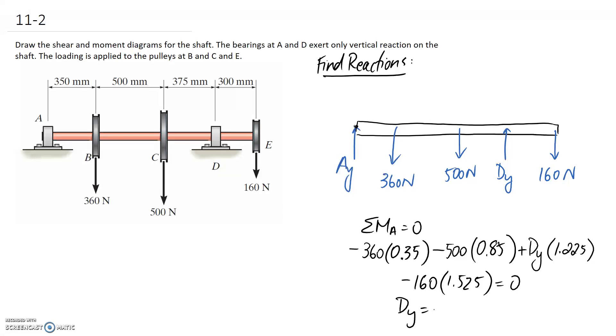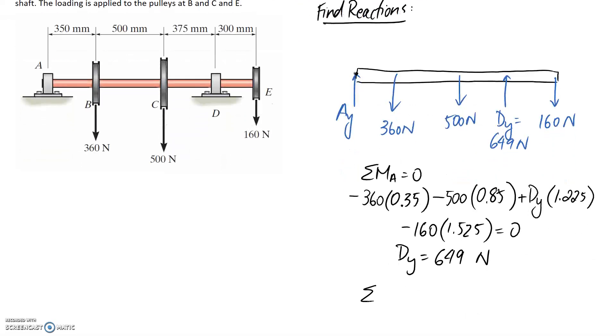So we can find out that Dy has to be equal to 649 Newtons. Now we need to determine what Ay is, and we can get that just by summing forces in the y direction.